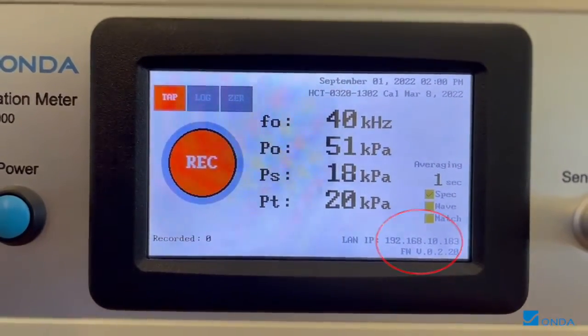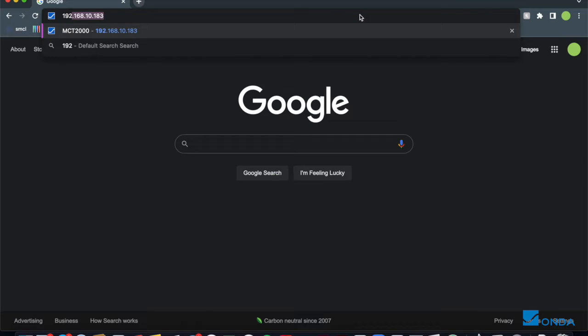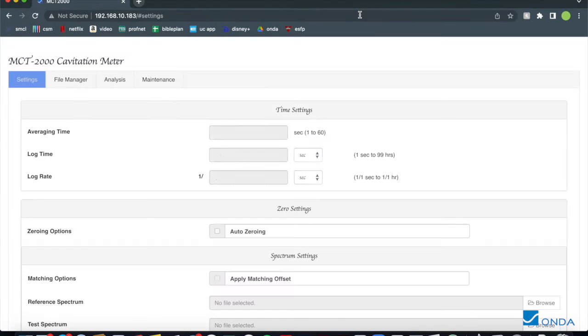Using the IP address found at the bottom right corner of the display, open a web browser to type in the address. This will take you to the MCT2000 software.